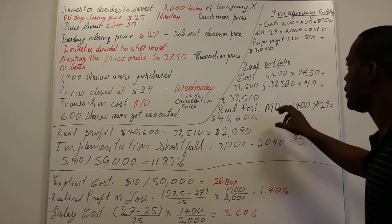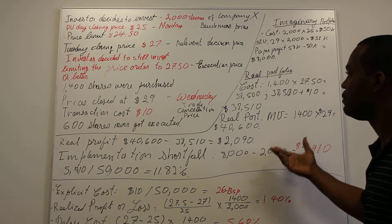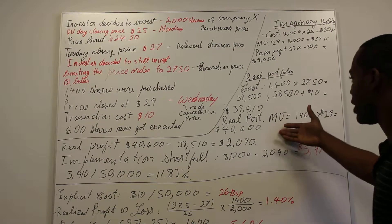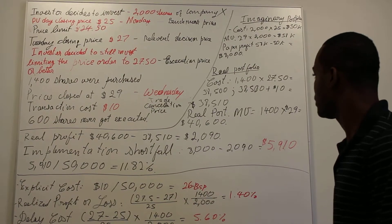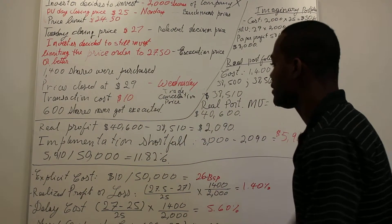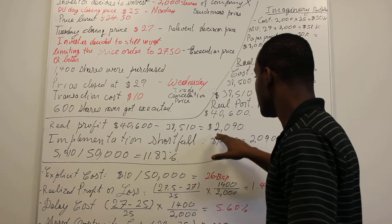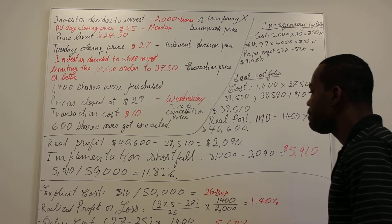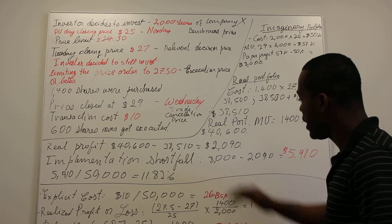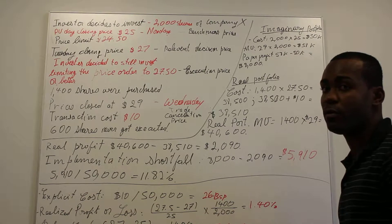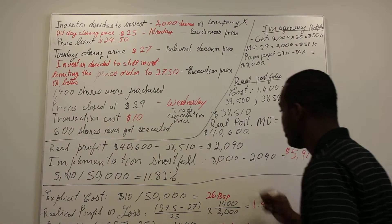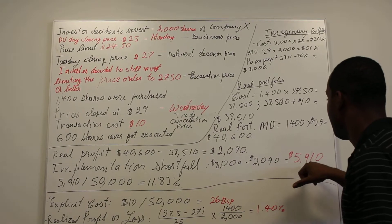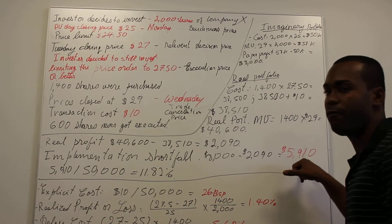We're not taking into account the uninvested cash from the 600 unexecuted shares. The real portfolio profit is $40,600 in market value minus the $38,510 cost, which equals $2,090 in actual profit. The implementation shortfall analysis compares the paper portfolio profit of $8,000 to the real portfolio profit of $2,090 — meaning the investor missed an opportunity to make $5,910. That $5,910 is the implementation shortfall cost in dollars.